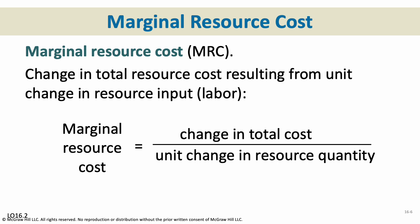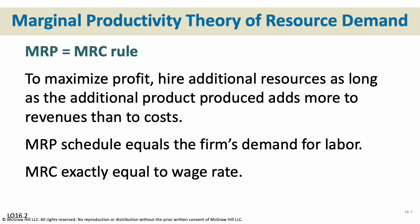The additional product we make from that labor must be more than our additional cost. Marginal revenue product equals marginal resource cost — we keep adding labor until they equal each other. To maximize profits, hire additional resources as long as the additional product produced adds more to revenue than to cost. Once they equal each other, that's when we stop adding more labor.